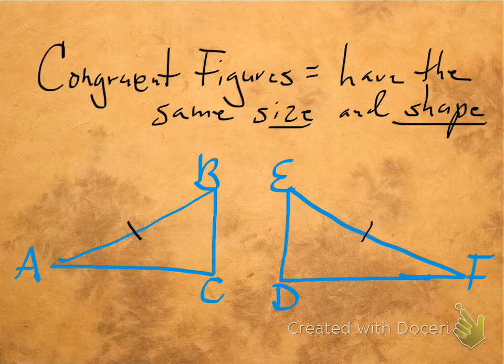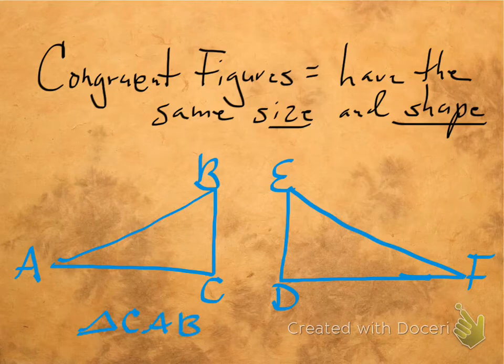Now, we actually go so far as to do something called a congruent statement. A congruent statement is basically stating exactly how the two triangles, not only are they the same size and shape, but how do they actually line up. So if I start with triangle, let's go with CAB, like a taxi cab.